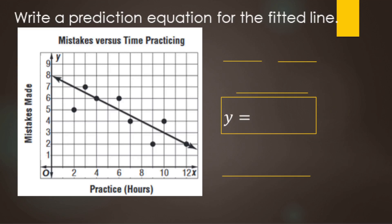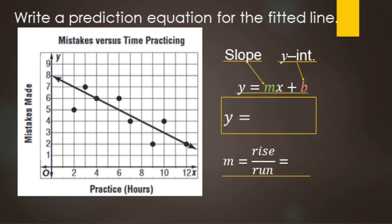Here we already have the trend line drawn and we're going to write a prediction equation for it. This is really no different than finding the equation of a line from any graph. We'll use slope intercept form because we can see the y-intercept — it's right there at 8. If we didn't know the y-intercept, we'd use point slope form. Remember: m is your slope or the rate, and b is the y-intercept, also called the start amount.